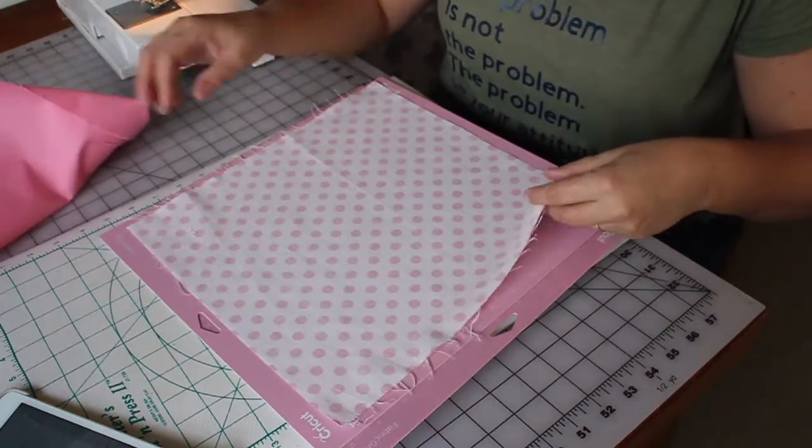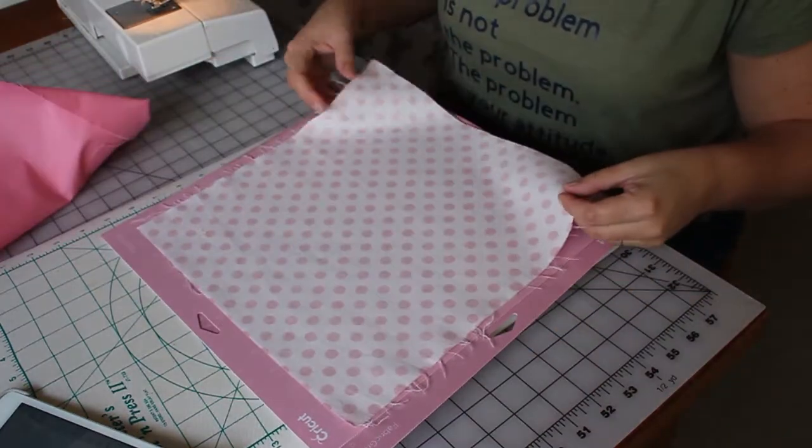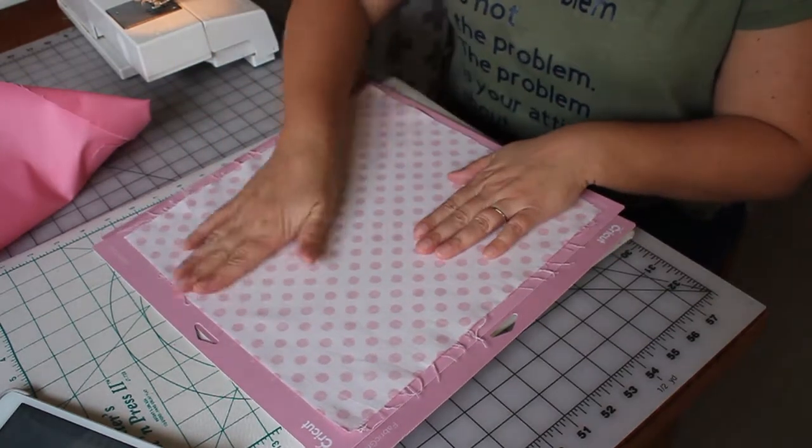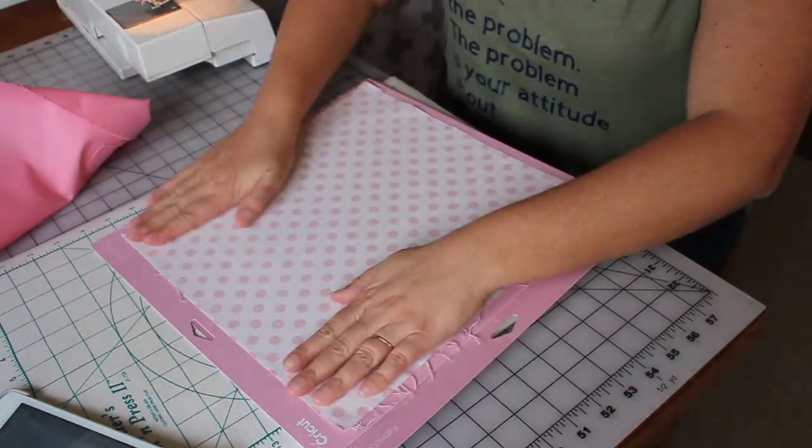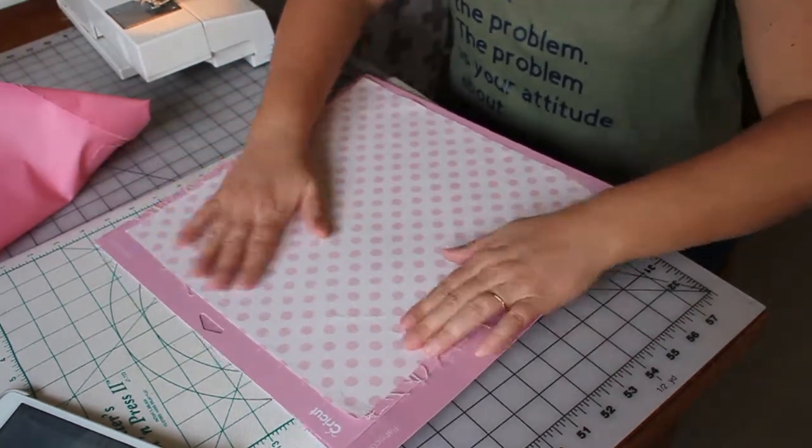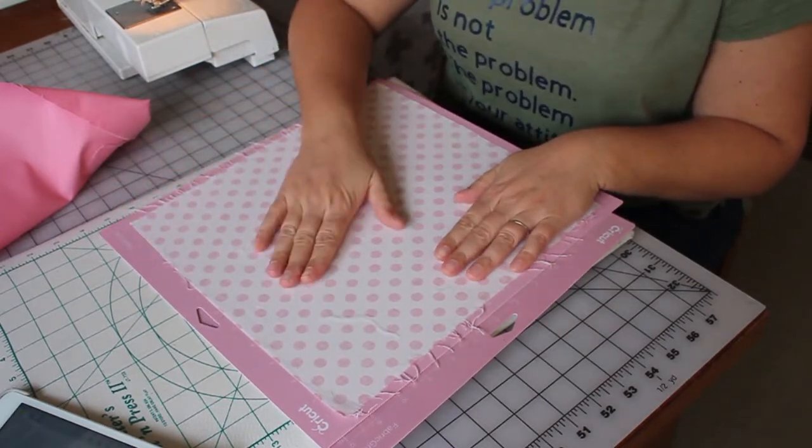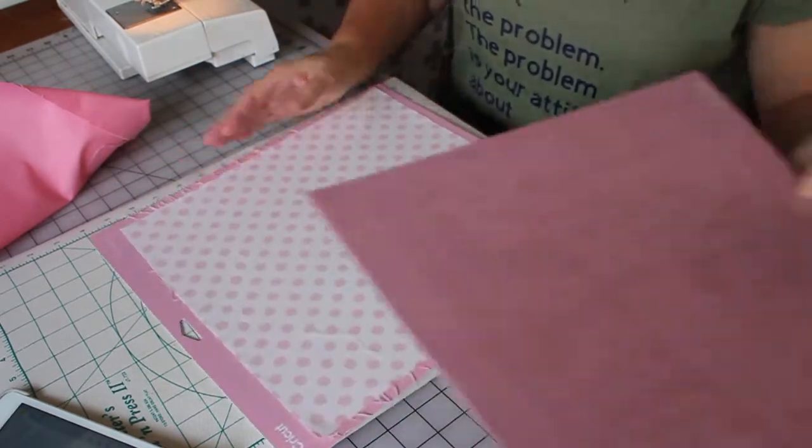You'll notice our fabric pieces are getting smaller and smaller as we cut out of them and that's totally fine. This entire project was designed to use up just about every last piece of this fabric. So we will be using it up and we're already on block 8 so we only have one more block to go.